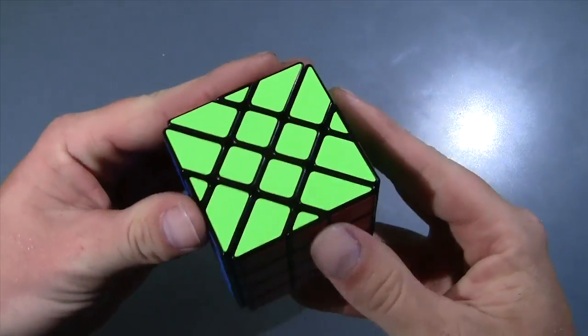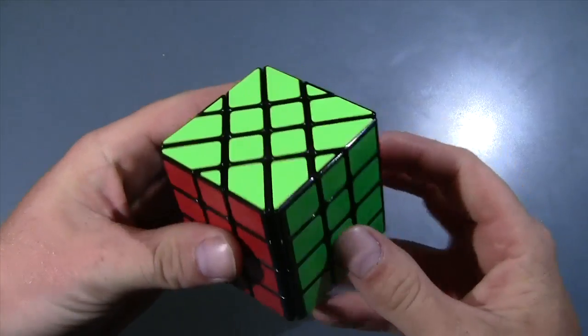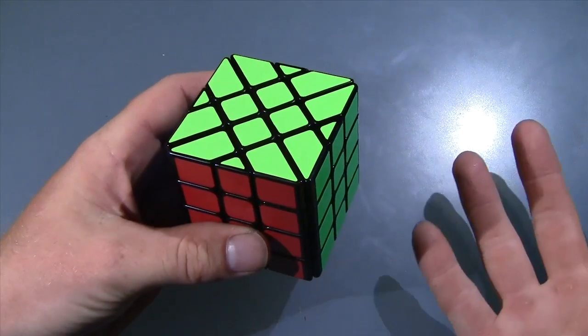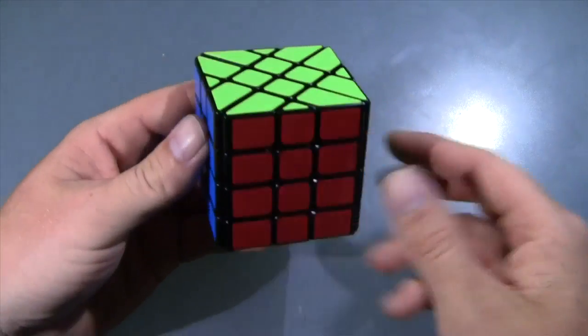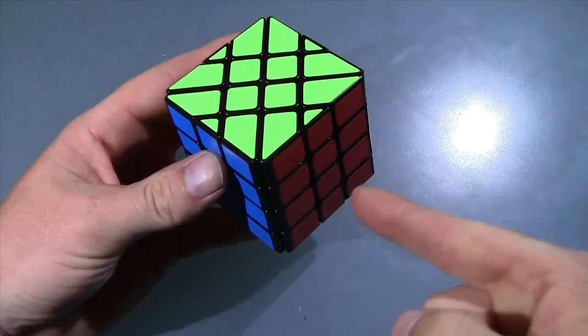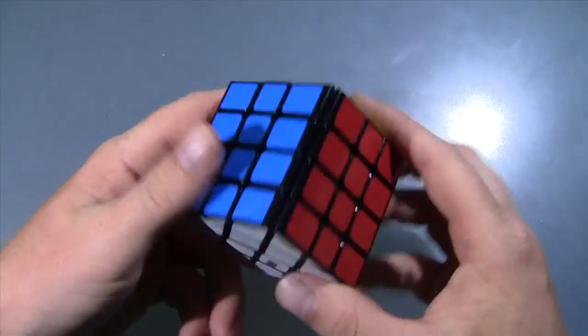Now the reason it turns so good is because its insides are exactly the same as the new Moyu 4x4 Aosu. The only thing that's changed is the shape of the outsides.